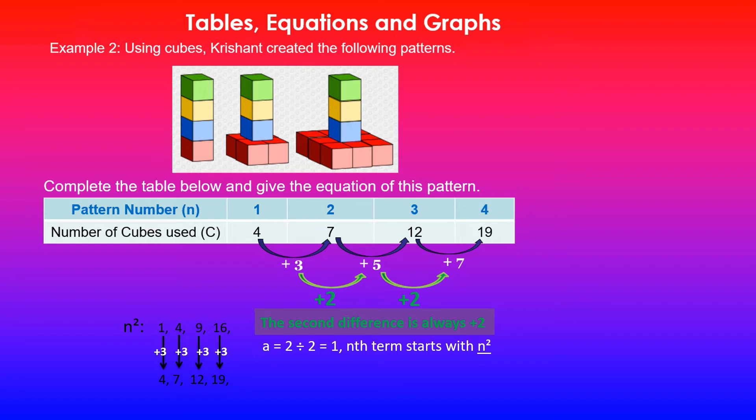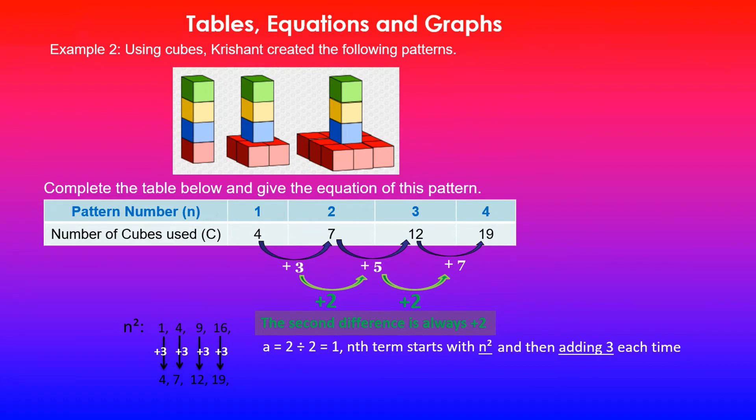Remember, your general form is y equals ax squared plus bx plus c. In this case, there is no linear term, it's just a constant 3. So c value is 3. If I want to now put this together, I already had n squared because a value was 1, and then I will need to add 3 each time because it's consistently increasing by 3 each time.